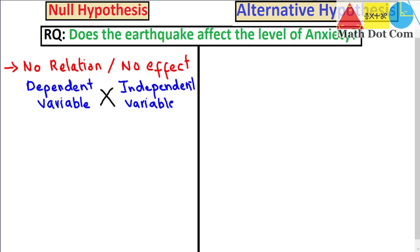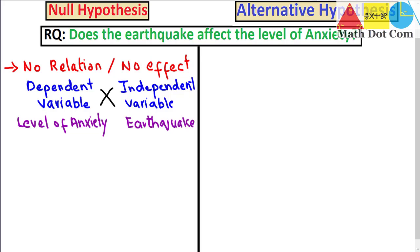In our research question, the dependent variable is the level of anxiety and the independent variable is the earthquake. So if we state the null hypothesis, we are basically concerned with no impact of the earthquake on the level of anxiety — they are not related to each other. It means the earthquake has no impact on the level of anxiety.